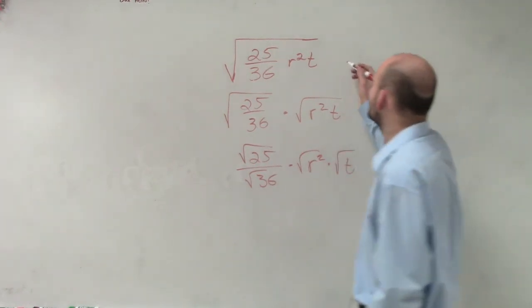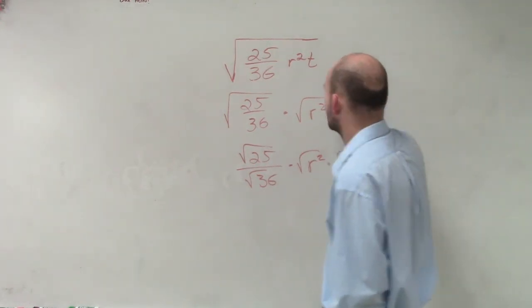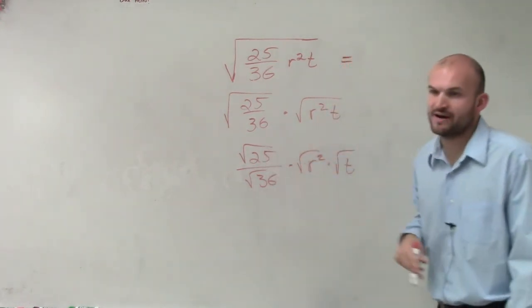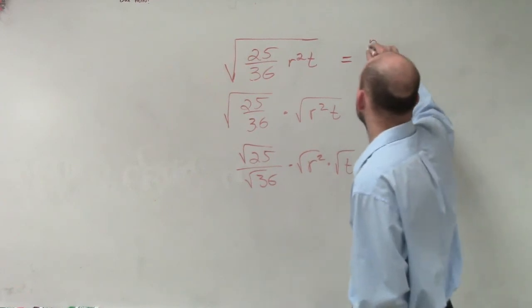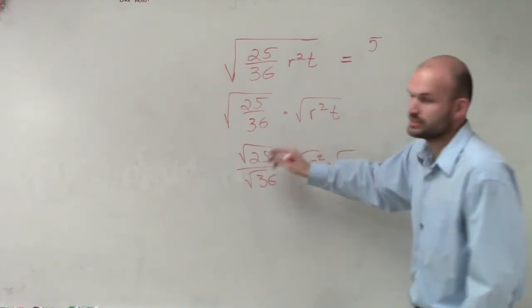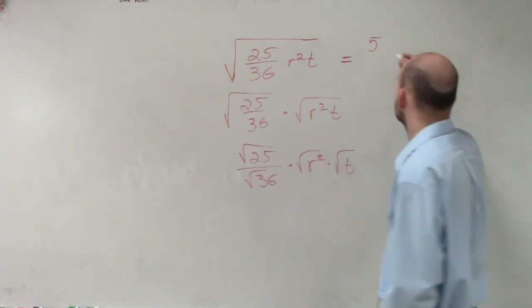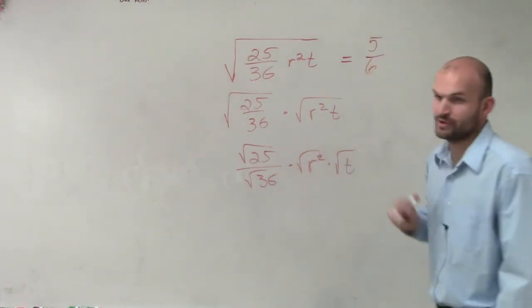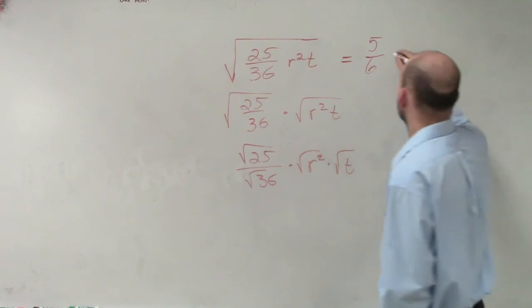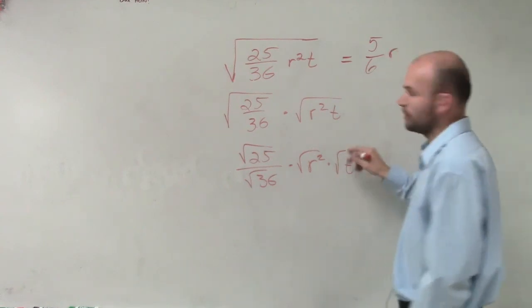Alright, let's go through the problem. Square root of 25 is? — 5. Square root of 36 is? — 6. Square root of r squared is? — r. And the square root of t remains as the square root of t.